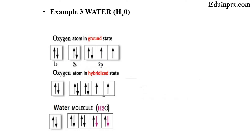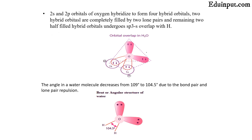The third and probably most important and confusing example for students is water, where the oxygen atom is bonded to two hydrogen atoms and has two lone pairs. This is the ground state electronic configuration of oxygen. In the hybridized state, one s orbital and two p orbitals hybridize. Two hydrogen atoms are bonded, and the orbital representation shows that two of the four hybrid orbitals are completely filled by the two lone pairs.